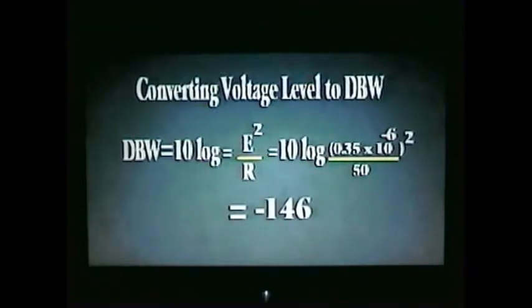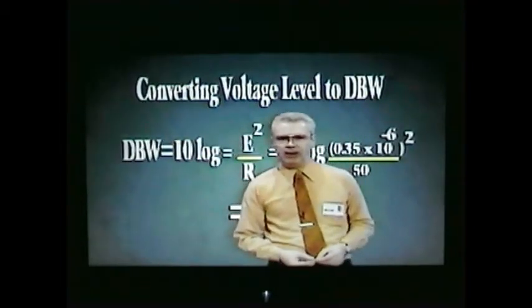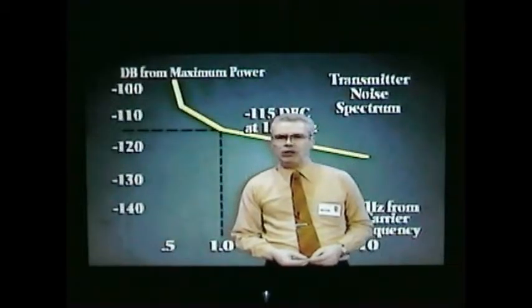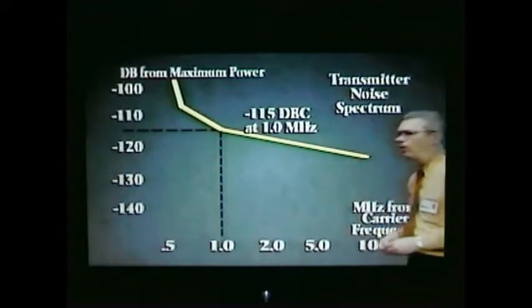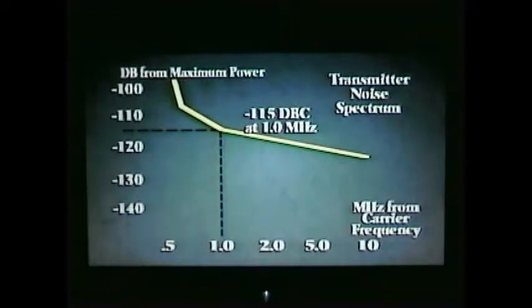Our objective is to attenuate our transmitter noise to this level. Transmitters don't radiate their noise at their full power output level — it's generally considerably less. To find out how much less, it's necessary to consult a transmitter noise graph. This is a plot of transmitter noise level, usually measured over a 10 kHz bandwidth, versus frequency separation from the carrier. As you see, further away from the carrier, the noise level is lower.